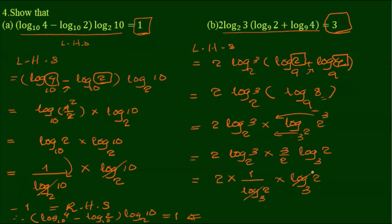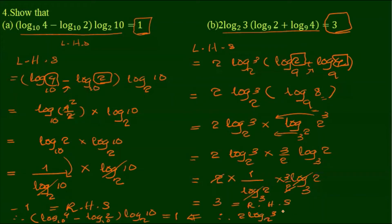Now we have to do 3 by 2. So we do 3 by RHS. Therefore: 2 log 3 base 2 times log 2 base 9, plus log 4 base 9, equal to 3.